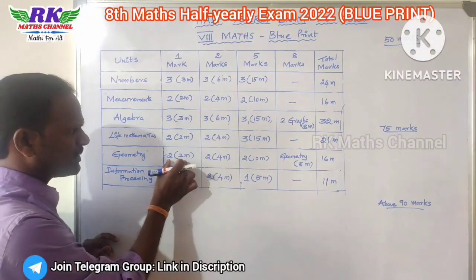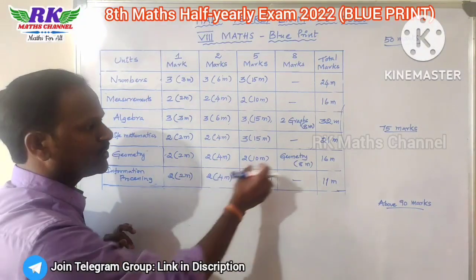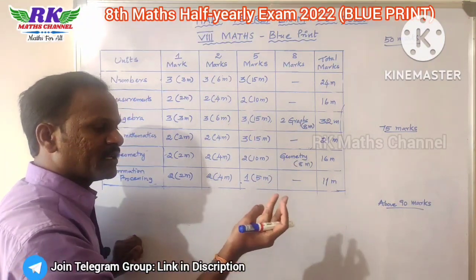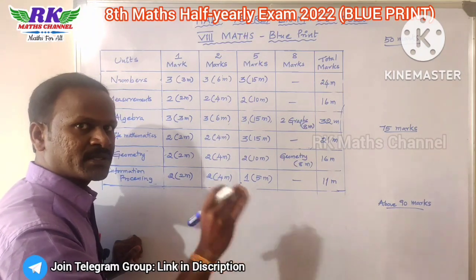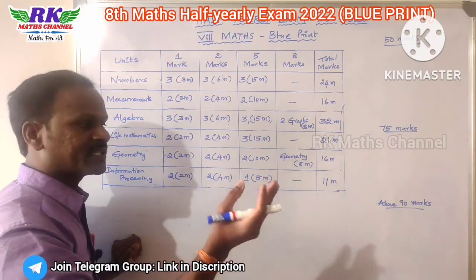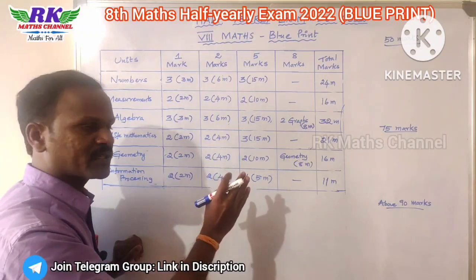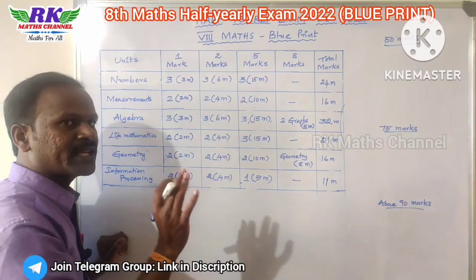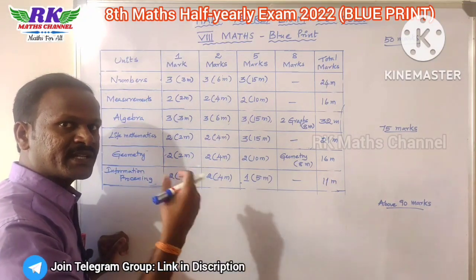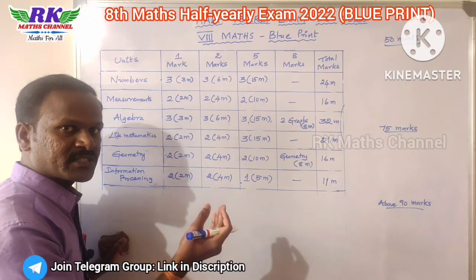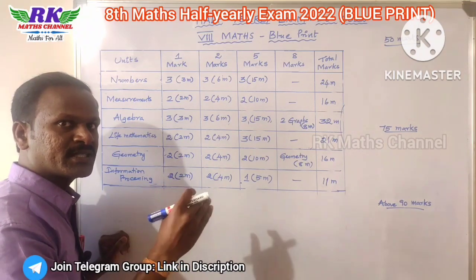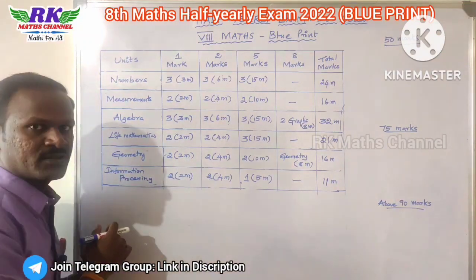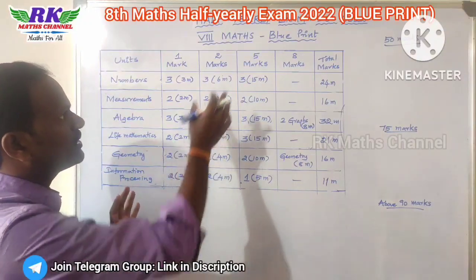The next is Geometry. There is constructions, quadrilateral, trapezium, parallelogram, rhombus, rectangle, and square. Then there is information processing. In the seventh unit, you have repeated division method and repeated subtraction method, and the Fibonacci series. Now this is the complete blueprint.